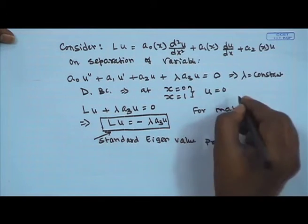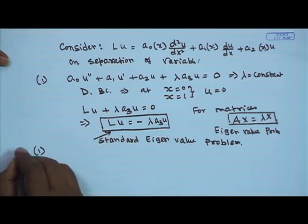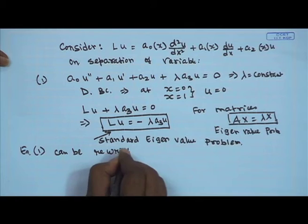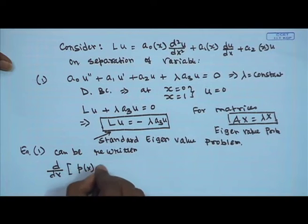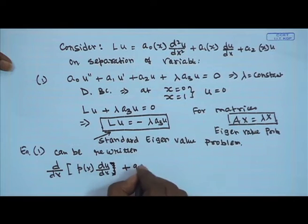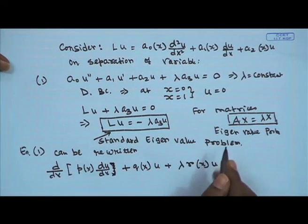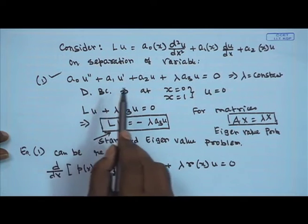Let us call this equation 1. Equation 1 can be rewritten as d/dx[p(x) du/dx] + q(x)u + λr(x)u = 0, where we define p(x), q(x), and r(x) in terms of the original coefficients a₀, a₁, a₂, and a₃.